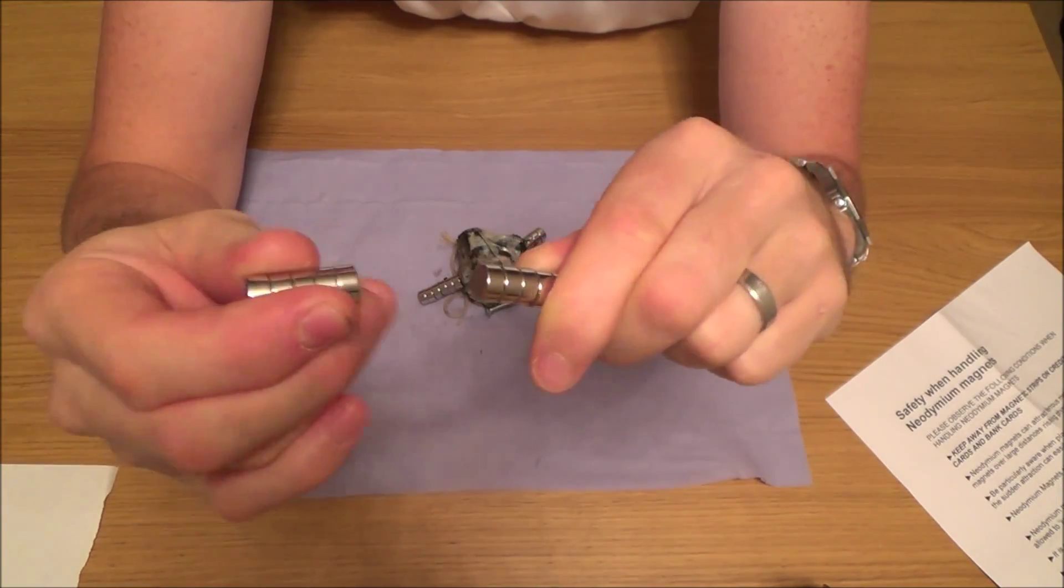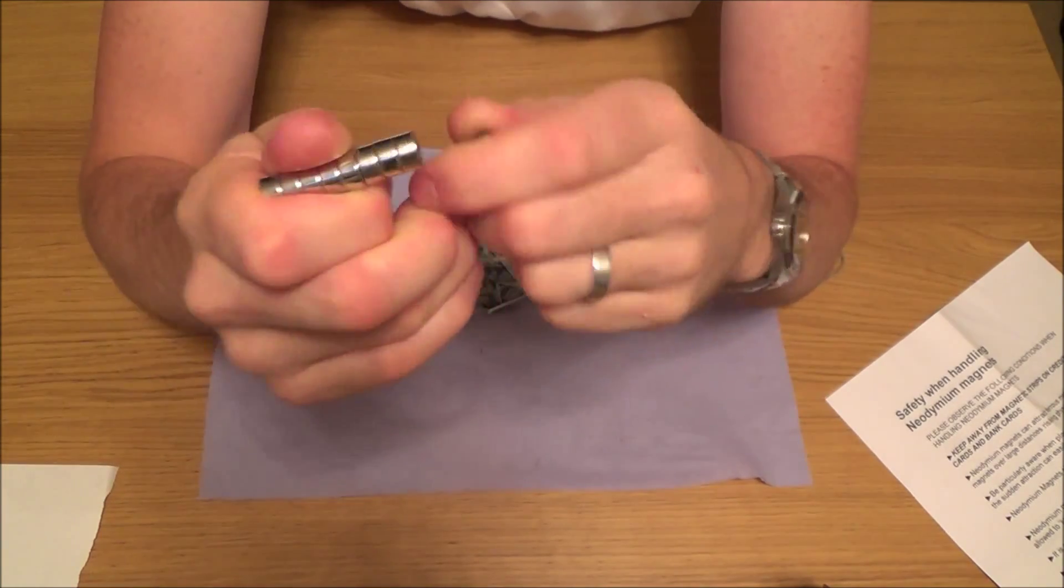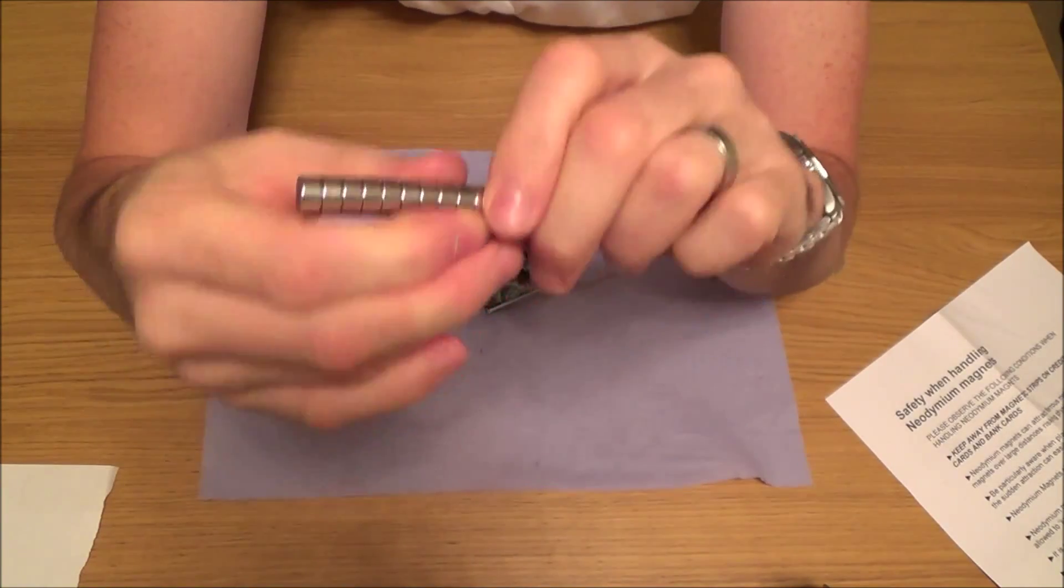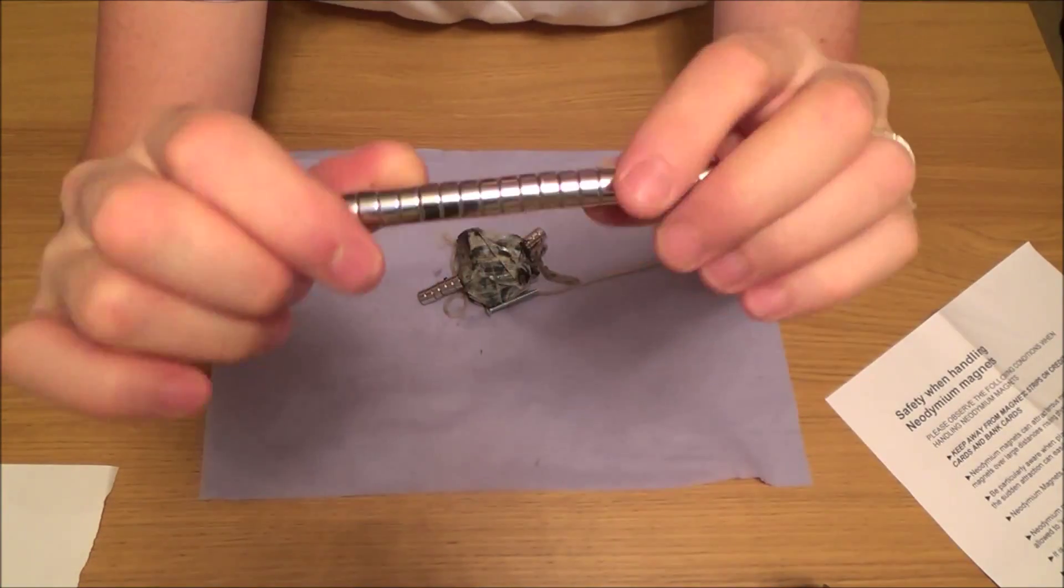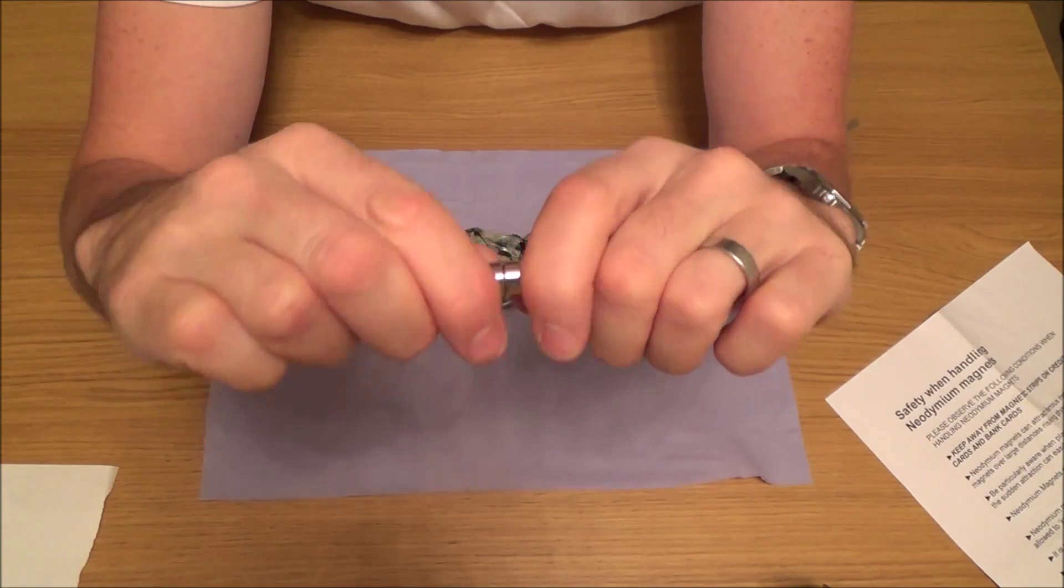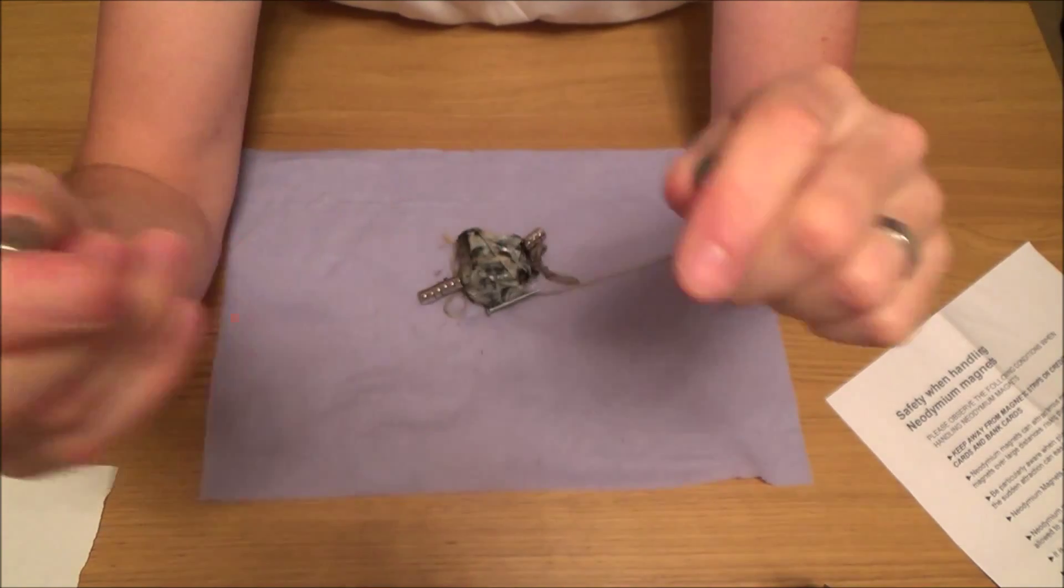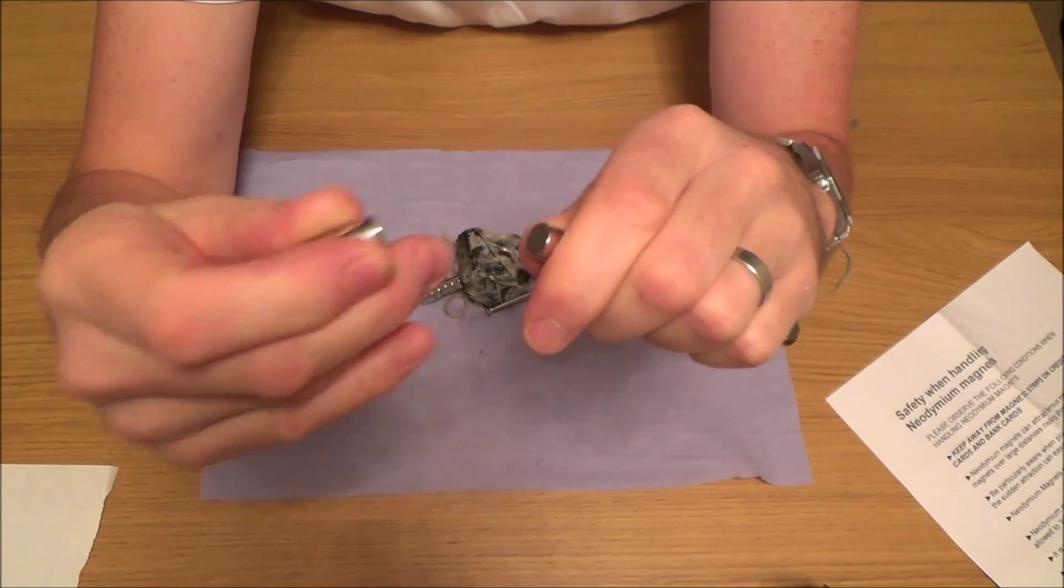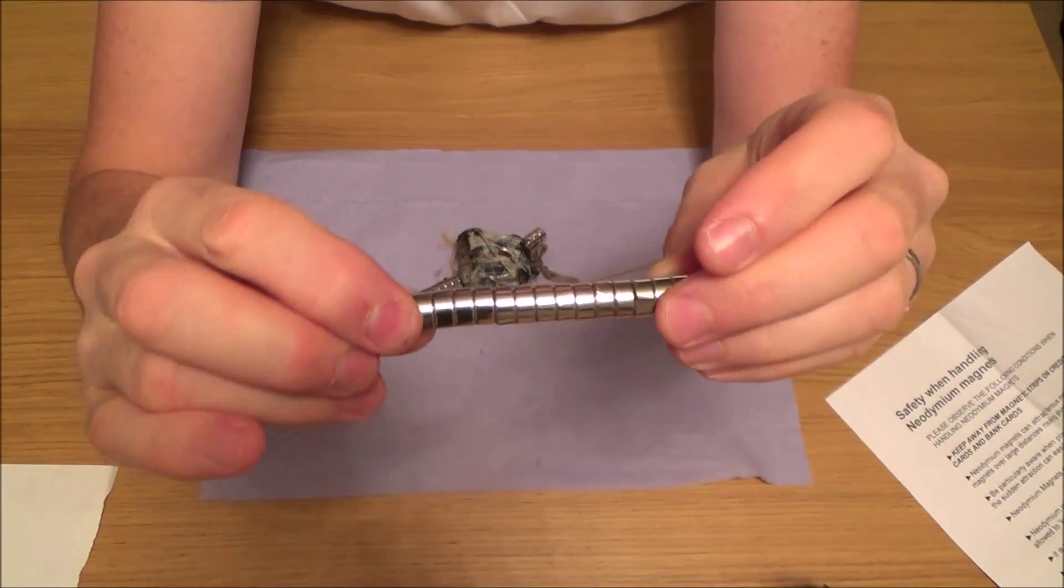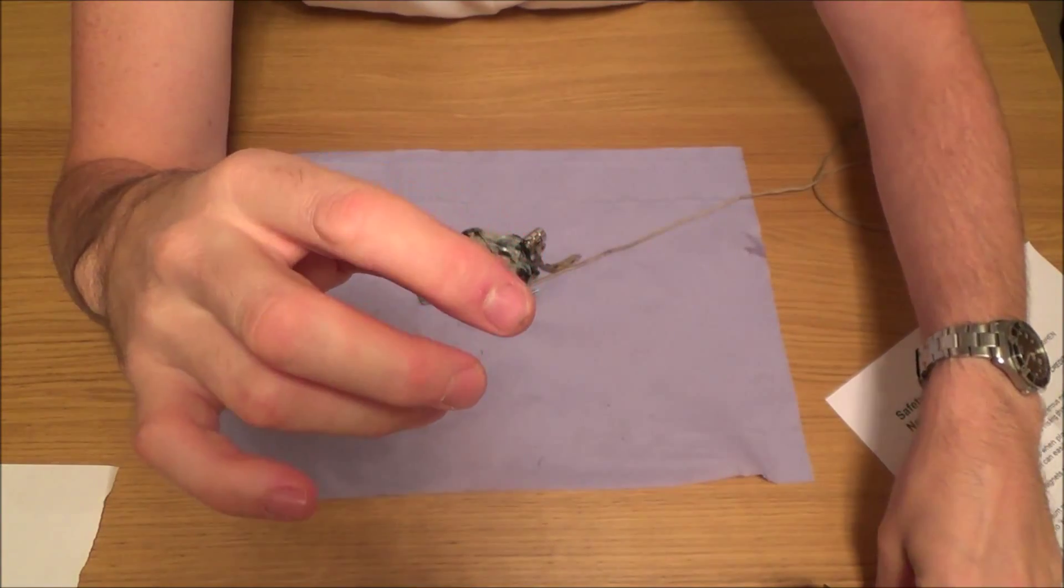They do attract from a long distance away. There's plenty of YouTube videos on these already if you want to scan about for them. They're not a toy so don't give them to your kids to play with because they are very dangerous. If they were to swallow these, in the intestine they can start attracting towards each other and go straight through the intestine wall.